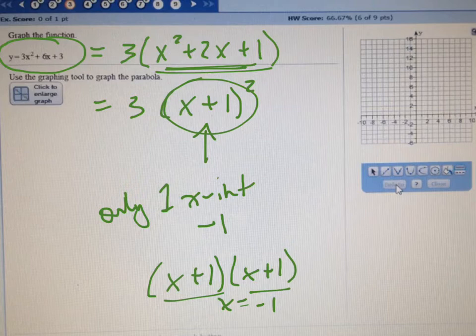And so negative 1 right here is going to be on your graph, it's going to be your only zero, which means it's going to bounce off of that. And then this 3 here further tells you how fast it rises.